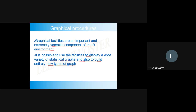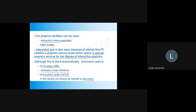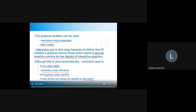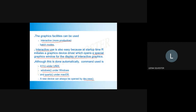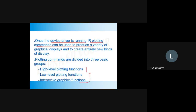Graphical facilities are a versatile component of the R environment. It is possible to display a variety of statistical graphs and also to build new types of graphs using graphical primitives. Graphical facilities can be used in both interactive or batch modes. Interactive use means it uses a special graphics window for displaying interactive topics. In Unix it uses X11 windows, Windows has a Windows function, and Mac OS uses Quartz. A new device can be opened using dev.new(). Once the driver is running, plotting commands can be used to produce a variety of graphical displays.